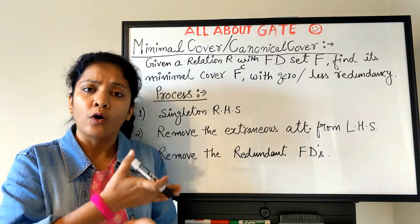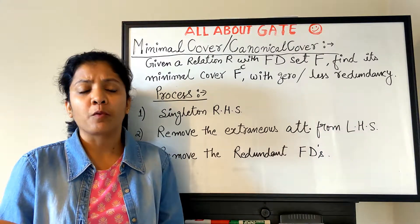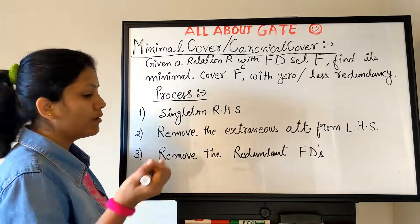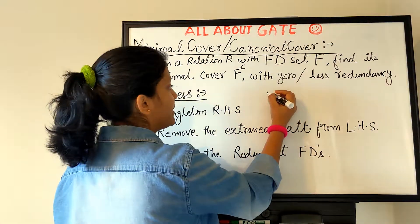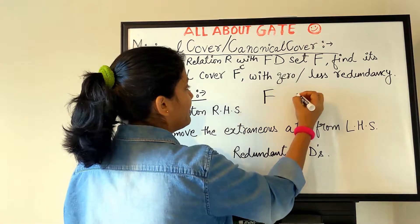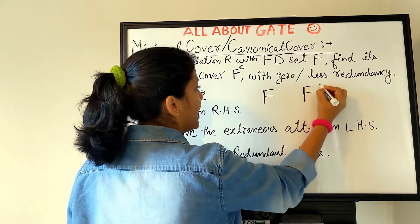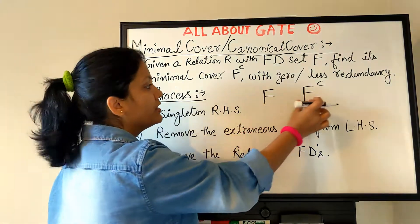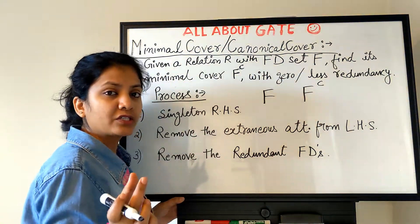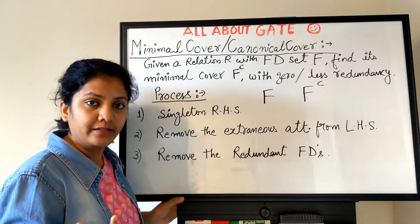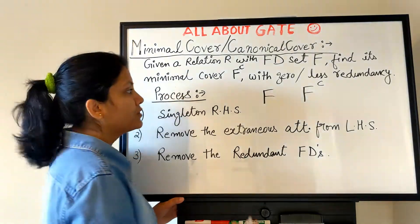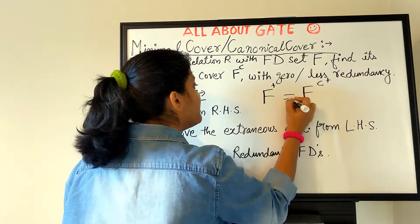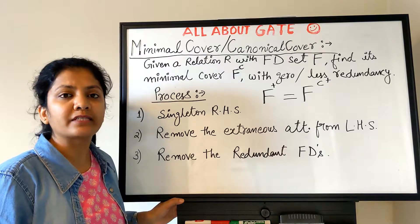That means you have to try to remove all the redundancy. Sometimes it is possible to remove it all; sometimes only some. The basic concept is that if you have F and you derive FC from it, their meaning should not change. Whatever implications are derived from F, FC should have the same implications — it has just been reduced in size, not in meaning. So the closure of F and the closure of FC should always be equal — then only they can have the same meaning.